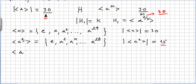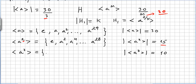Now A to the power of 3: 3 divides 30, and 30 divided by 3 is 10. So the order of ⟨A³⟩ is 10. This will be the identity, A cubed, A⁶, and this will end in A²⁷. So 30 divided by 3 is 10. This is the group generated by A to the power of 3, a group of order 10.